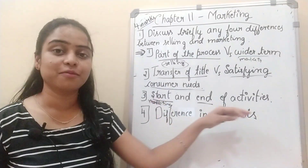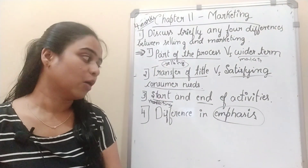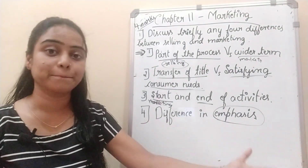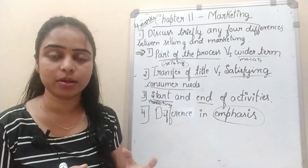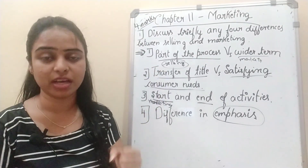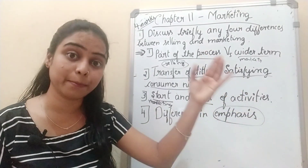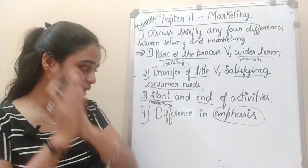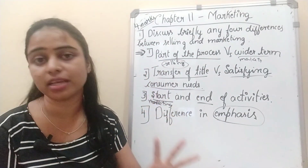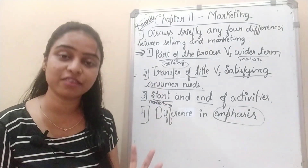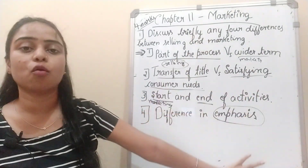The fourth difference is in emphasis and focus. Selling focuses on bending the customer to the product — we develop a product and then sell whatever we have produced to the customer. That is the emphasis of selling. Whereas in marketing, the main focus is on identifying consumer needs and satisfying them. That is the focus of marketing.